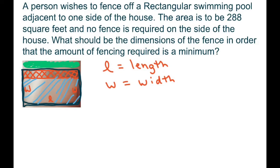Hi everyone. A person wishes to fit a fence off a rectangular swimming pool adjacent to one side of the house. The area, which is length times width, is said to be 288 square feet, and no fence is required here in this area right here. What should the dimensions of the fence be in order that the amount of fencing required is a minimum?